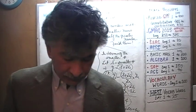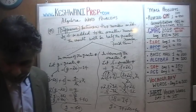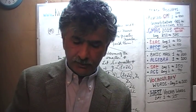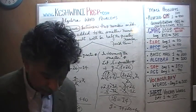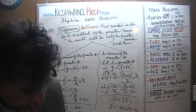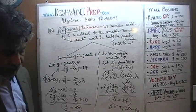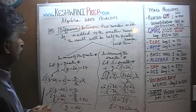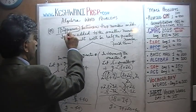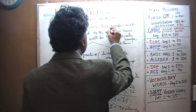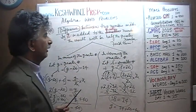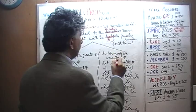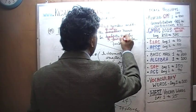Let's do one more problem. This time, pause the video and do it yourself, then compare your work afterwards. Here's the new problem: the difference between two numbers is 26. We are further told that if you were to add 2 to the greater number, the result will be 3 times the smaller number.